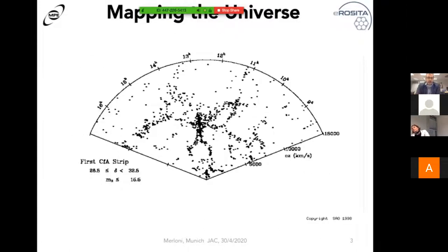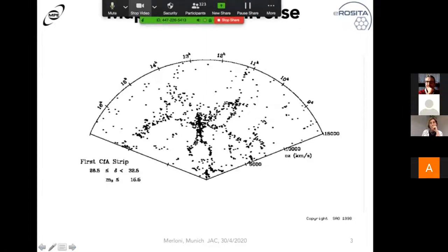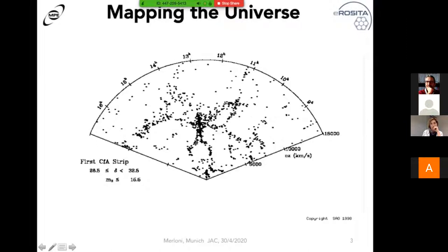eROSITA has been designed and operated as a survey instrument. Surveys do many things for astronomers — they allow you to gather huge volumes of data to figure out hidden correlations and study populations. But one of the most fundamental things surveys do is create maps that tell us where we are in the universe and give us an idea of our place in our local neighborhood.